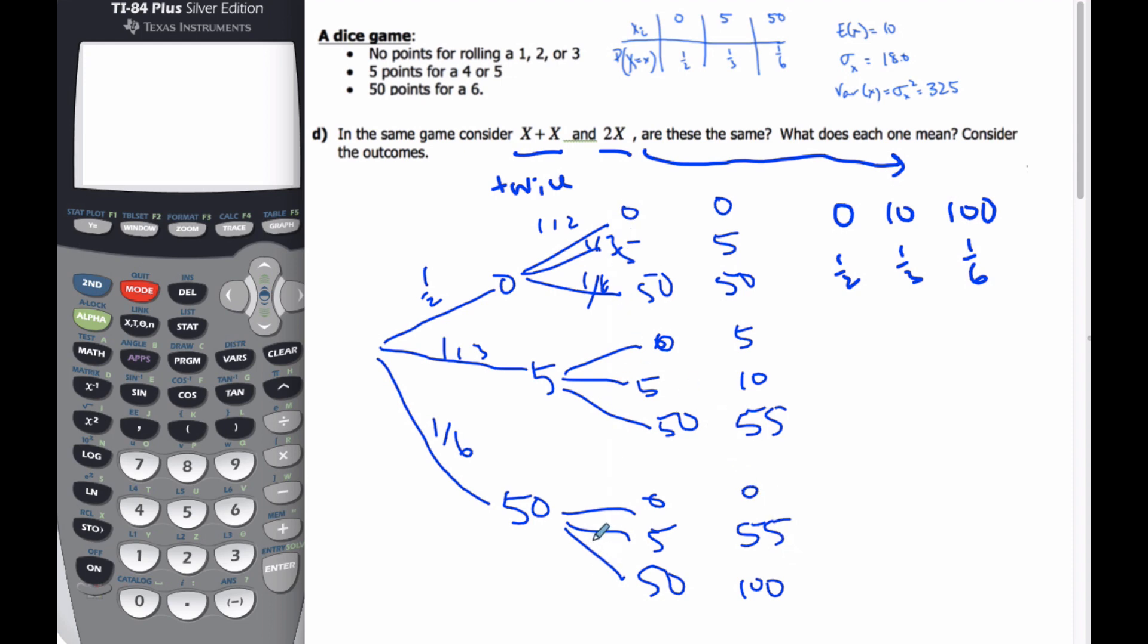Each of these branches of a tree have a probability attached. So it could be 1 third times 1 half. So the probability of getting this branch of the 5 is going to be 1 sixth. The probability of this branch will be 1 ninth. And so these probabilities stay the same as associated with 0, 10, and 100, whereas these ones are going to be different.